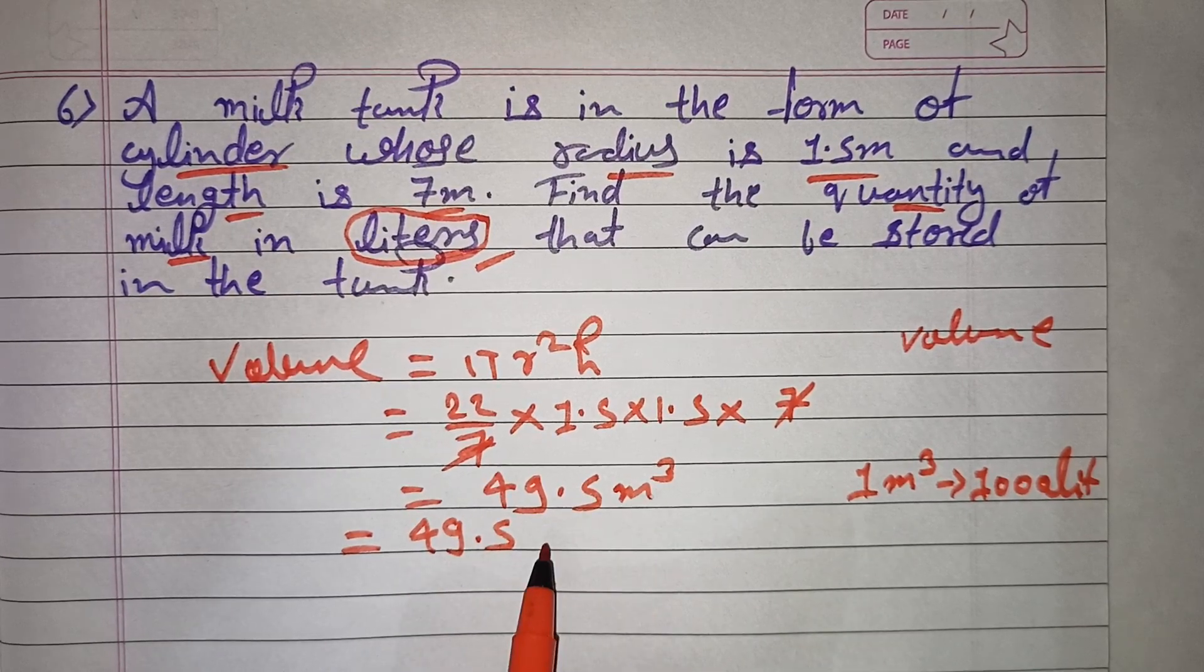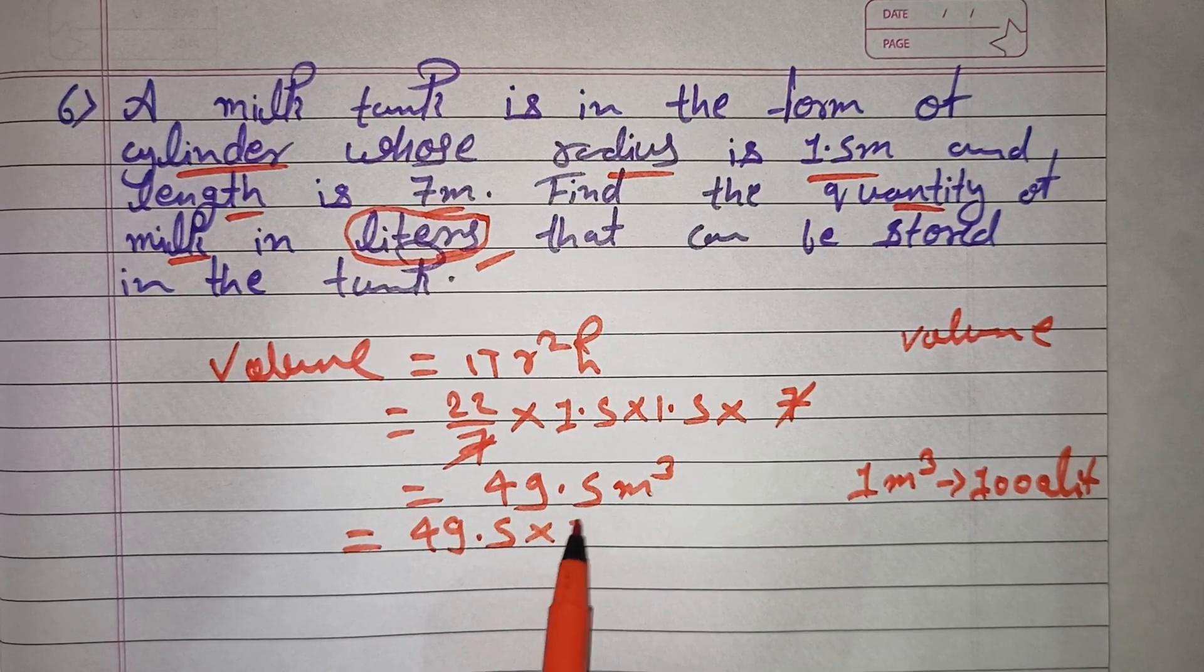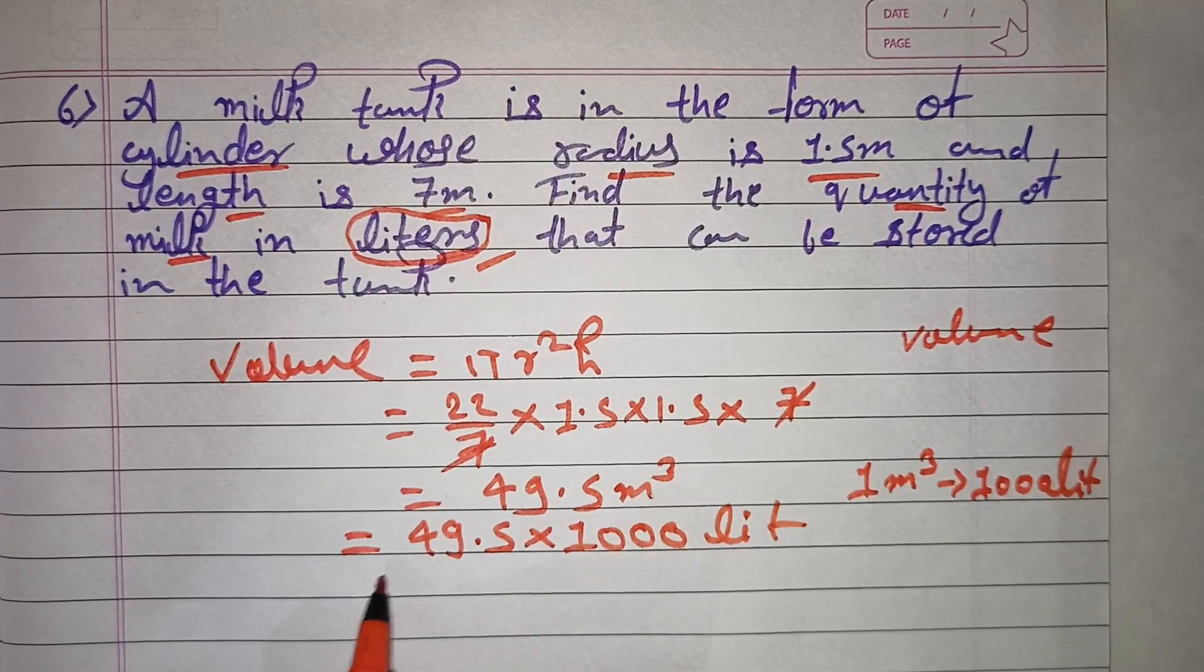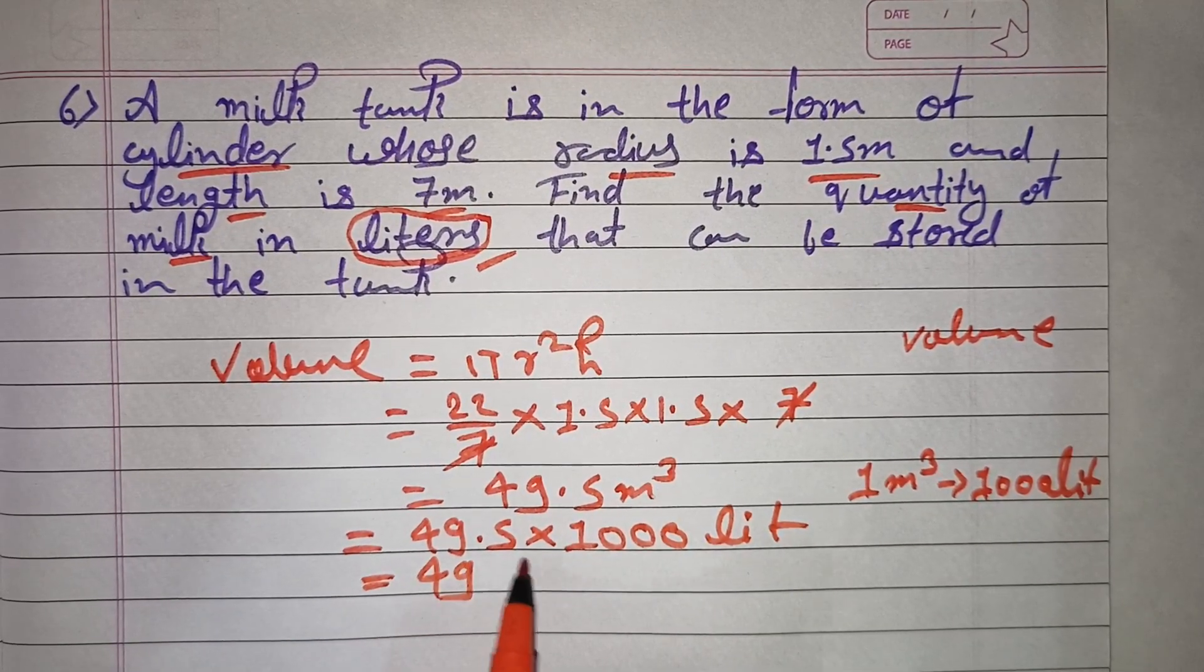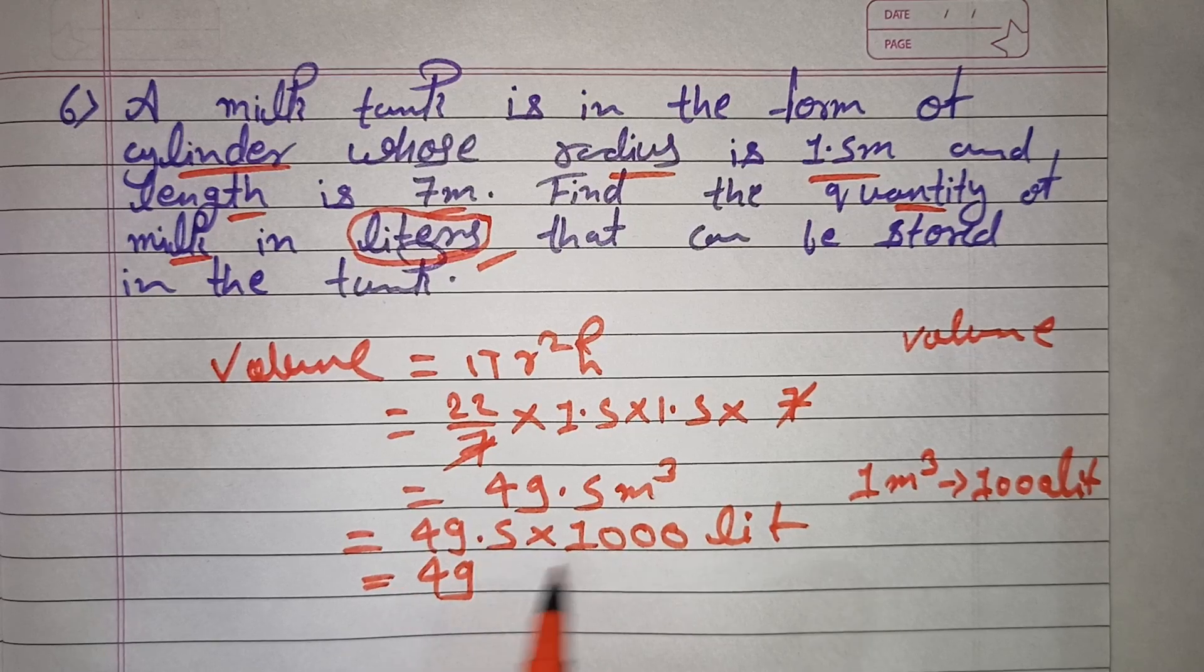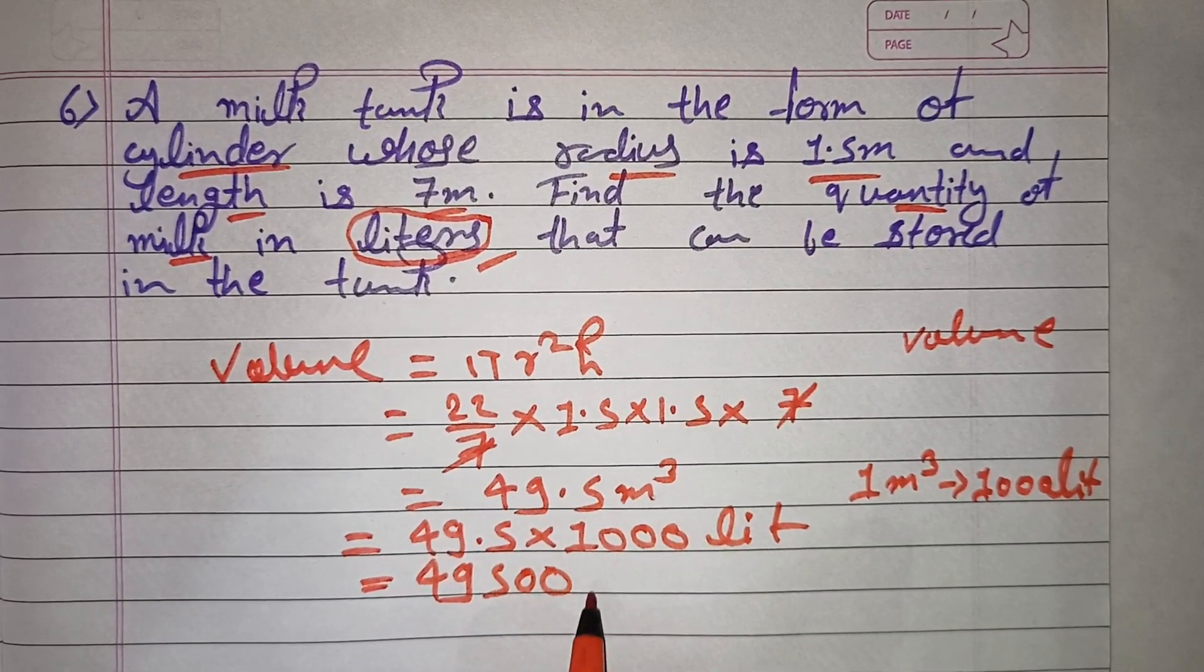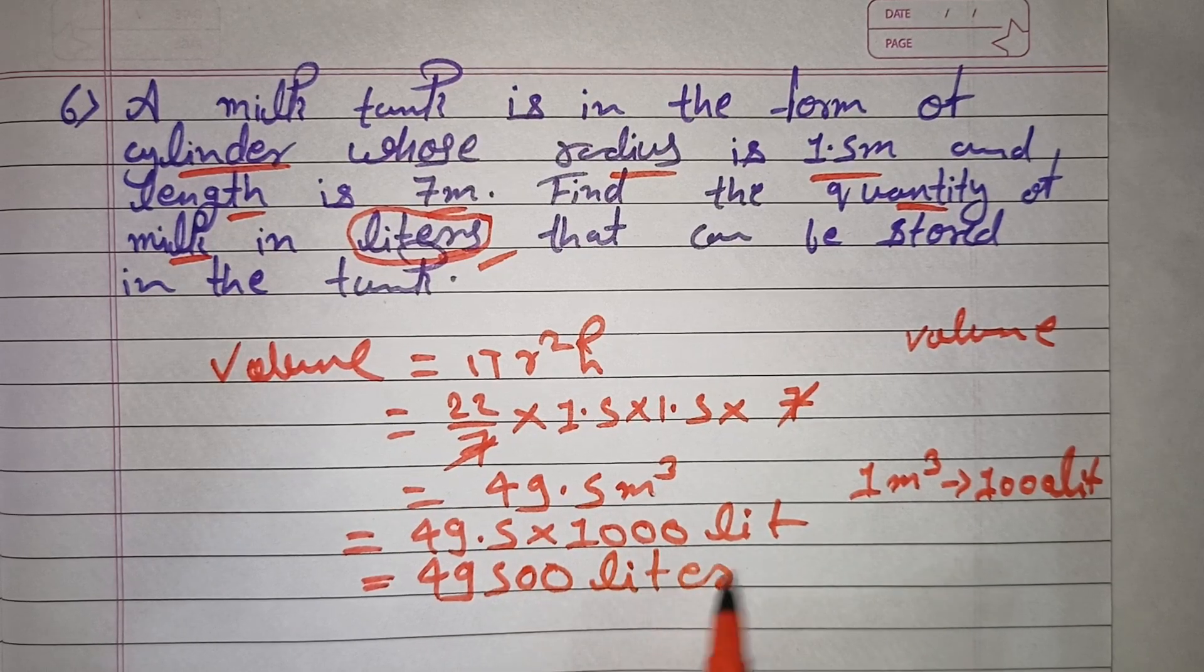Replace this meter with 1,000 liters. Multiply 49.5 by 1,000. So 49,500 liters is your answer in liters, your answer is ready.